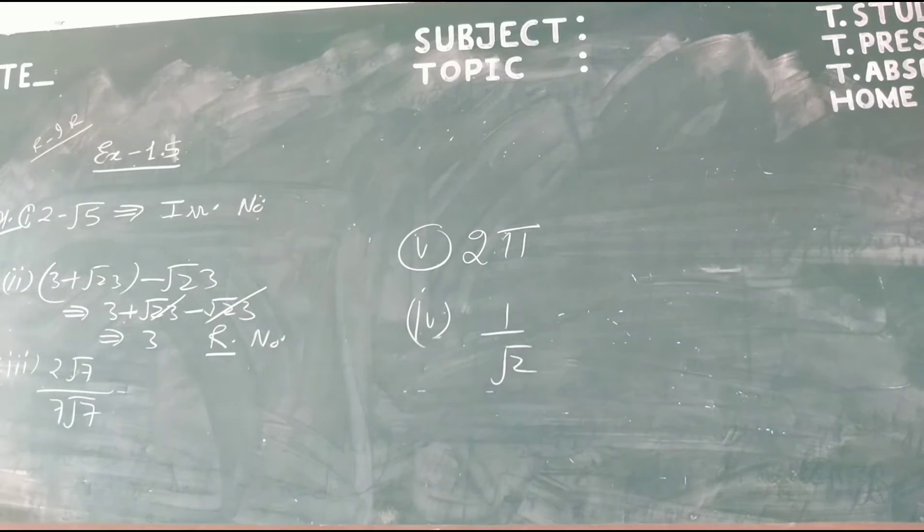Third part is root 2 root 7 upon 7 root 7. Root 7 and root 7 cancel to get 2 upon 7. This is the form of P upon Q, so this number is a rational number.